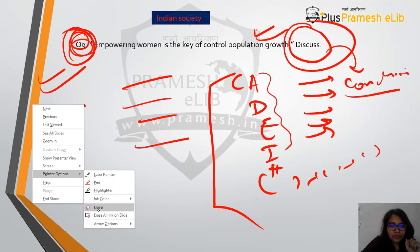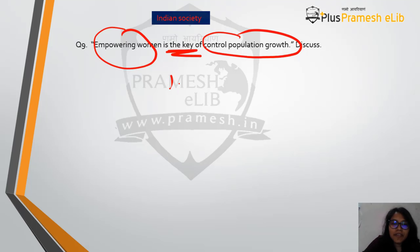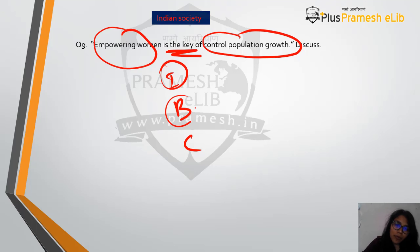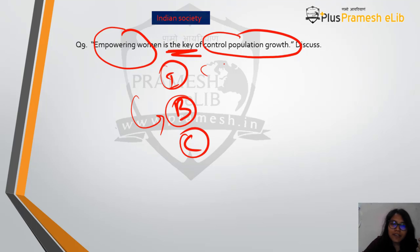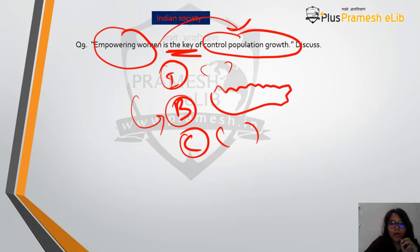For every question you will have an intro, a body, and a conclusion. The main theme always comes in the body. Whatever is the fringe element comes in the introduction, and the conclusion is just one or two lines. Here the main theme is how empowering women leads to control of population growth — that goes in the body.